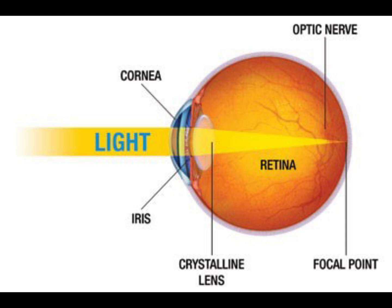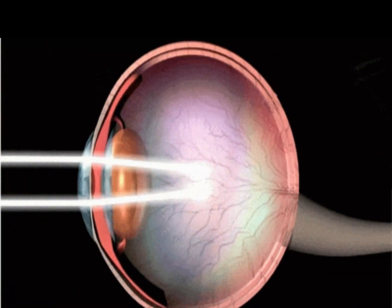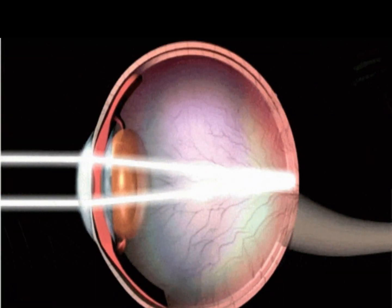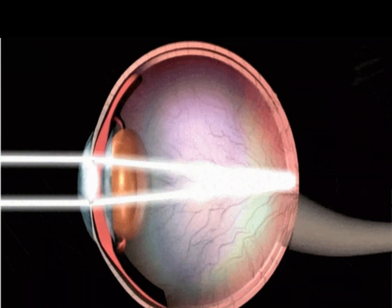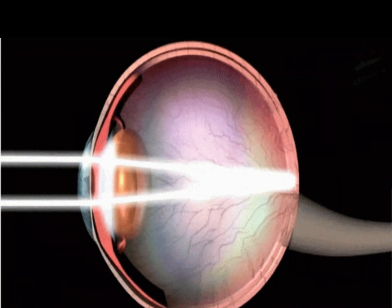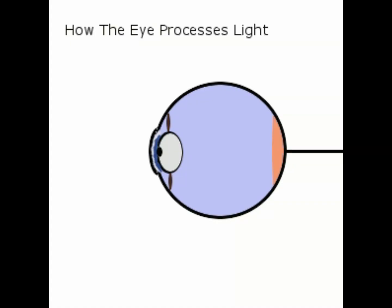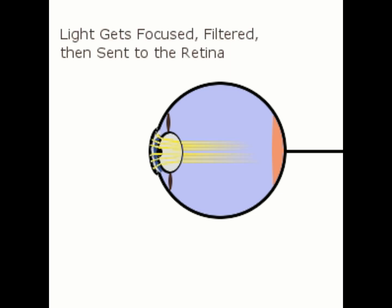In a normal eye, the light rays come to a sharp focusing point on the retina. The retina functions much like the film in a camera — it captures all of the light rays, processes them into light impulses through millions of tiny nerve endings, and sends these impulses through over a million nerve fibers to the optic nerve.